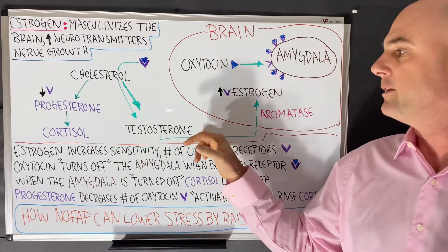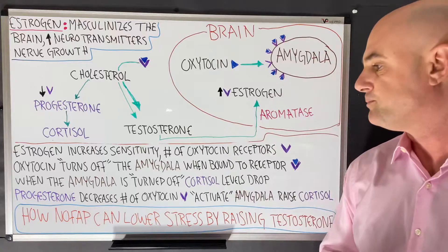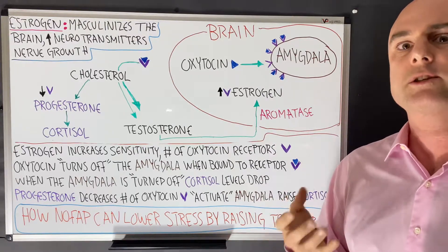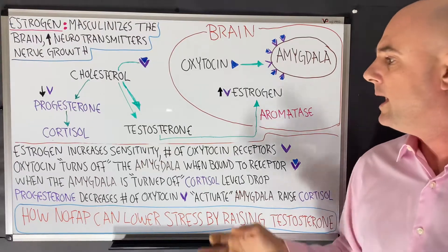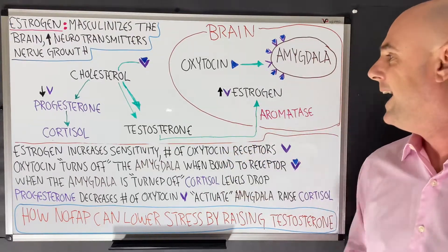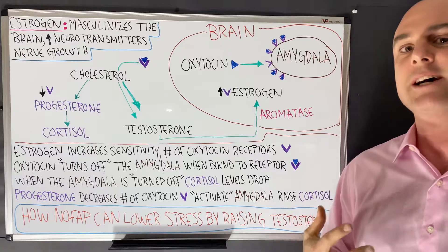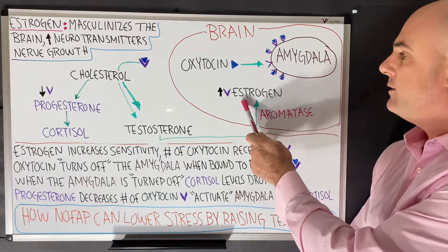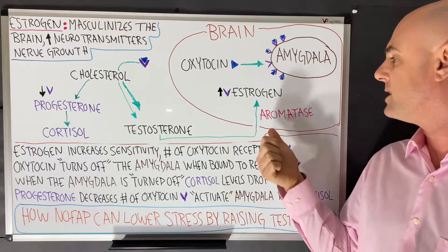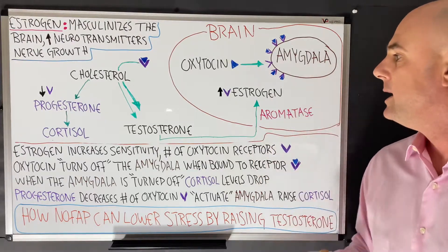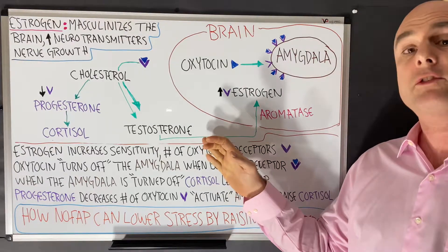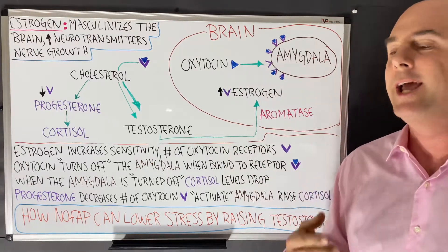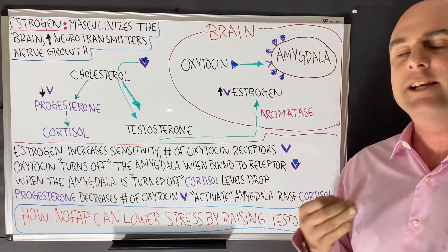Cholesterol is used to make testosterone, so when we practice nofap our testosterone levels go up. When testosterone enters the brain, it can be converted to estrogen by an enzyme called aromatase. Once testosterone is converted to estrogen in the brain, that increases the sensitivity and number of oxytocin receptors on the amygdala.